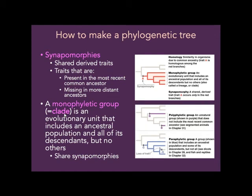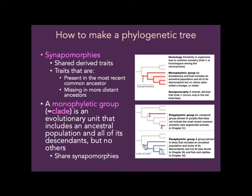We'll also introduce polyphyletic and paraphyletic groups. A polyphyletic group is an unnatural group — like a group of wormy things that might include worms, snakes, legless lizards, and millipedes that are not related to each other because they do not have a common ancestor. A paraphyletic group is a group in which you kick out one of the individuals — for example, if you kicked whales out of the mammals because they don't have fur, that would be a paraphyletic group.